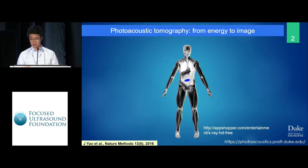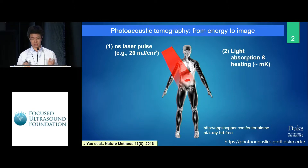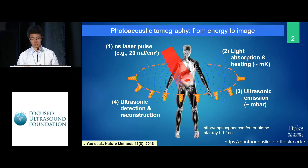Photo-acoustic imaging is a hybrid between optical excitation and ultrasound detection. What we do here is we use a laser pulse to excite the molecules in the tissue, which will be absorbed by the tissue and increase the local temperature a little bit. The thermal expansion of the molecule will generate ultrasound emission, and we can detect ultrasound signals outside the tissue and reconstruct where the photons are absorbed.